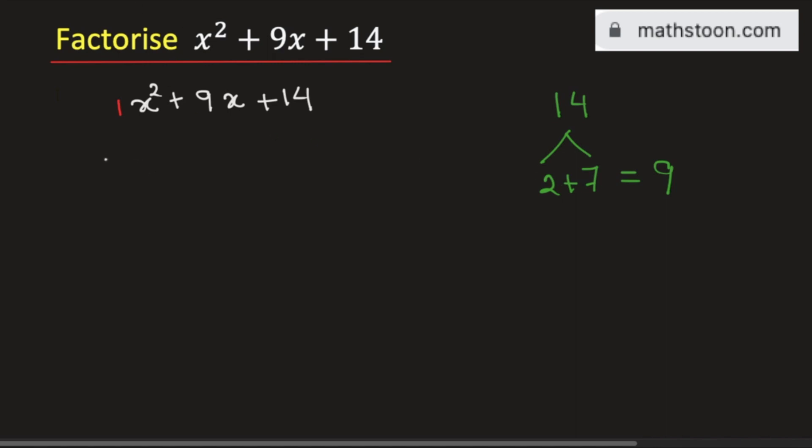Then this equation can be written as x squared plus 2 plus 7 times x plus 14. Simplifying we will get x squared plus 2x plus 7x plus 14.